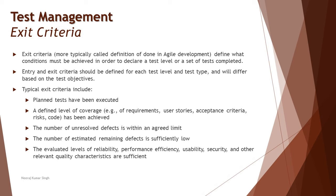On the other hand, exit criteria — which in agile are typically called Definition of Done — consist of a list of items, activities, and milestones that determine you are done with what you planned to do and ready to stop. This defines the conditions that must be achieved to declare that a test level or set of tests is completed. Entry and exit criteria should be defined for each test level and test type wherever applicable. Typical exit criteria include: all planned tests have been executed — for example, if you planned 100 test cases, all 100 have been run — and a defined level of coverage has been achieved, such as 90% or 80% coverage on the written code.